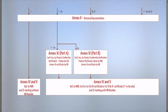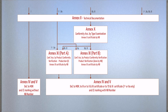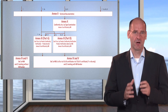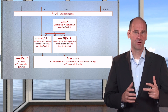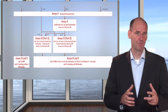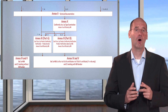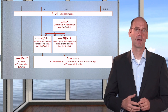For class 2B and class 3 products, additionally, a type examination is required. In other words, not only the production is audited, but also the product — more precisely, a representative sample — is tested by the notified body, in addition to the technical file review. This means the notified body examines the product, typically by testing it, but there is no audit of the development process. Just the result is what counts.